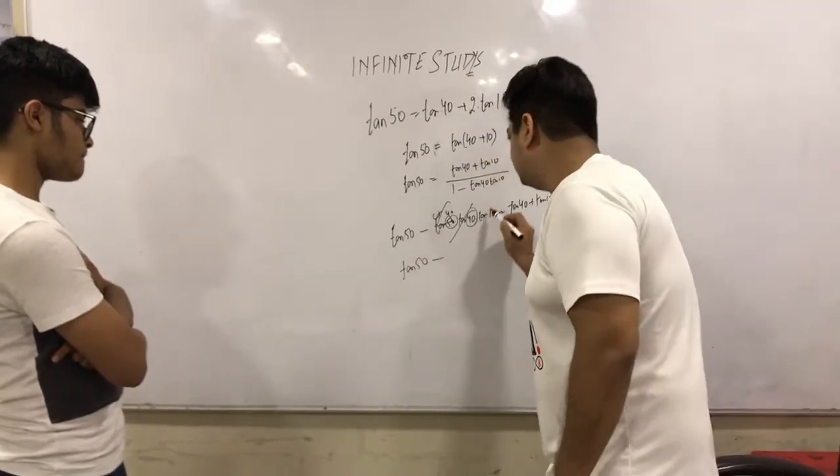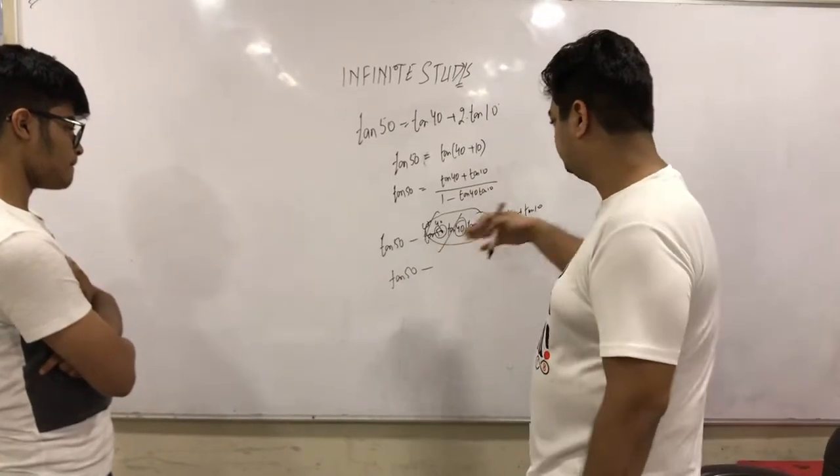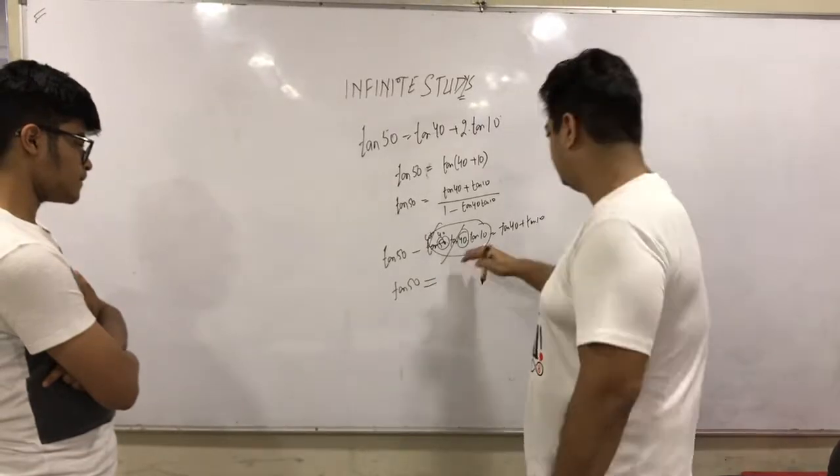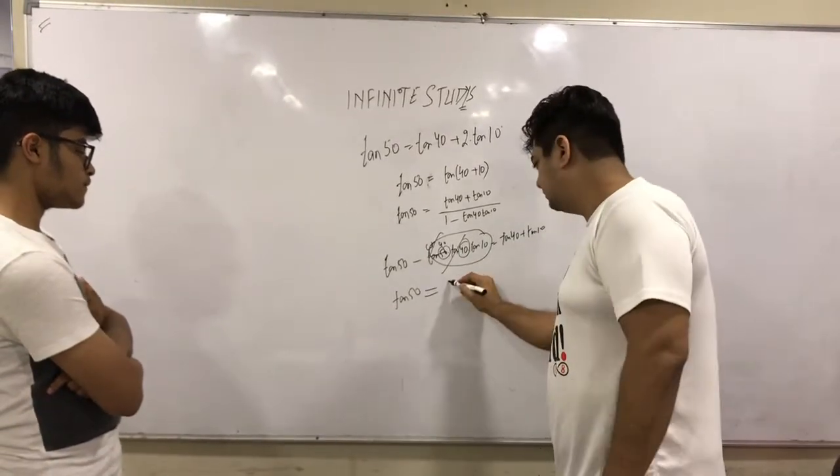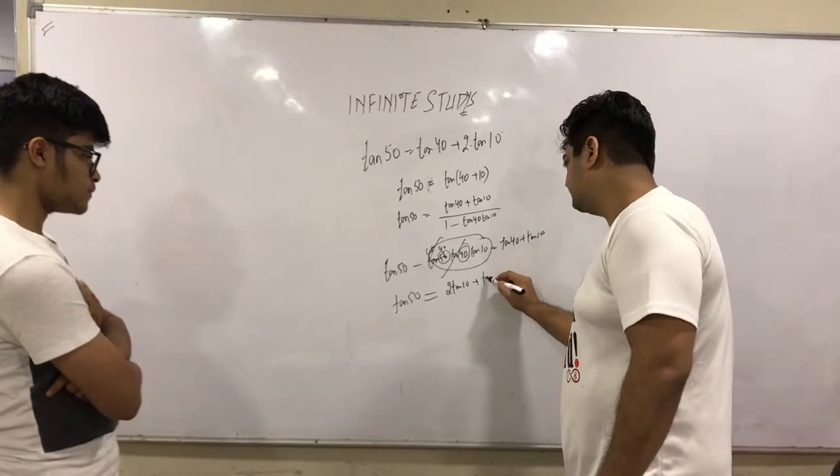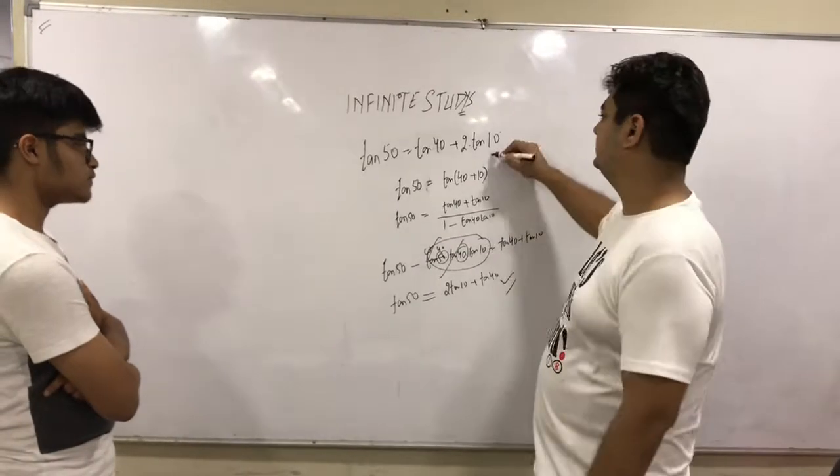You will be having tan 50 minus tan 10, which if you transfer it over here will become another tan 10. So you will be having 2 times tan 10 here, and tan 40 is already there. That's what you will get.